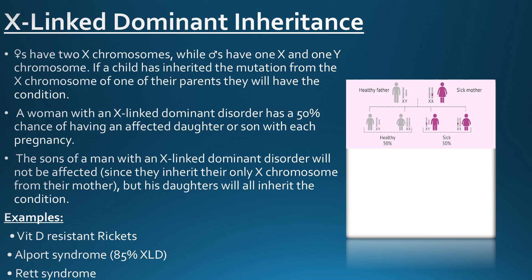Moving on, let's learn about X-linked dominant inheritance. Females have two X chromosomes whereas males have one X and one Y chromosome. If a child has inherited the mutated X chromosome even from one parent, they will manifest the disease. A woman with an X-linked dominant disorder has a 50% chance of having an affected daughter or son with each pregnancy. As shown here, the mother has only one mutated gene, resulting in 50% of her children being affected and the remaining 50% healthy.